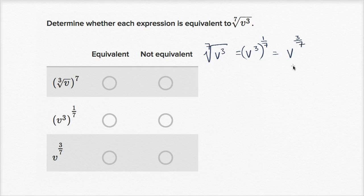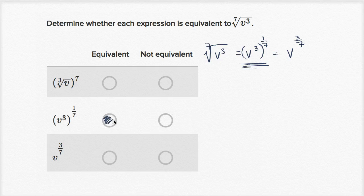So we've written it in multiple forms. V to the third to the one-seventh power — that's the form we have right over here, so that is equivalent. V to the three-sevenths — that's what we have right over here, so that one is definitely equivalent.